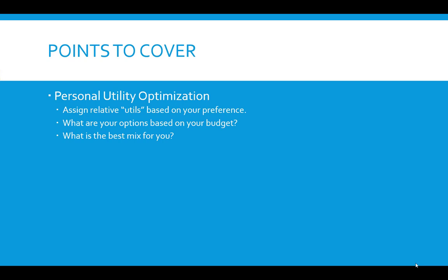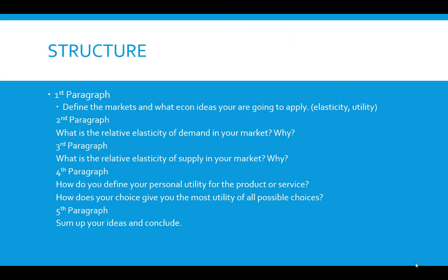If it's a product like a cell phone, your other option might be a different cell phone, or something else you could do with your money — maybe keep the old one with a broken screen and spend on food, rent, or your car, or save it. What is the best mix for you? That's the core of utility optimization: where do you get the most utility, the most satisfaction, and what is the right mixture?